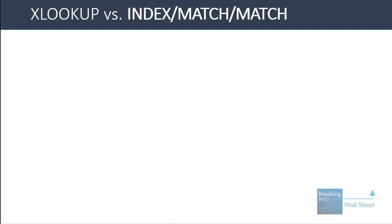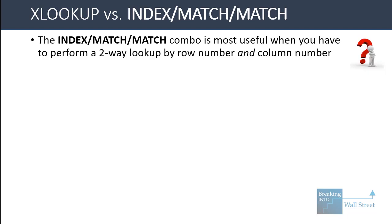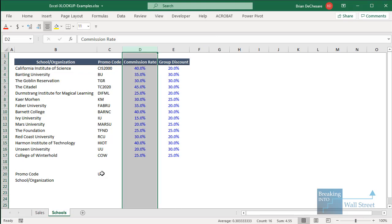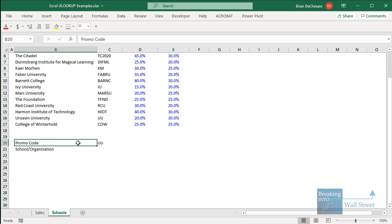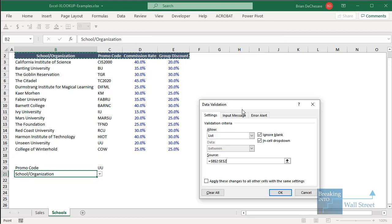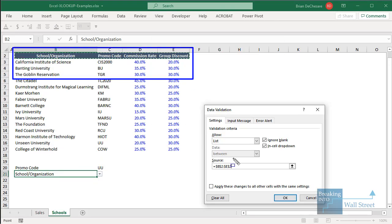Now let's look at XLOOKUP versus the INDEX MATCH MATCH combination. INDEX MATCH MATCH is most useful when you need a two-way lookup by row and column number. For example, outputting any parameter for a school organization based on its promo code. On the schools tab, there's a promo code and school organization area with data validation to select parameters from the top of the table.